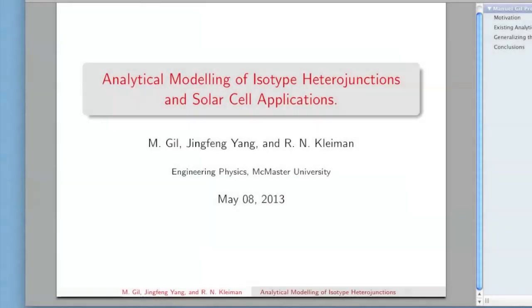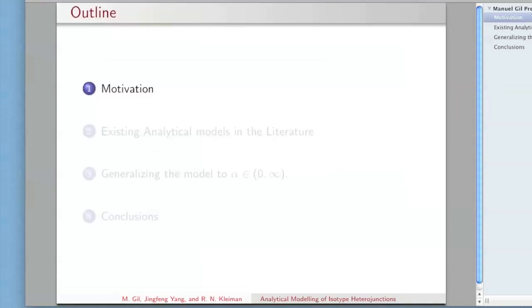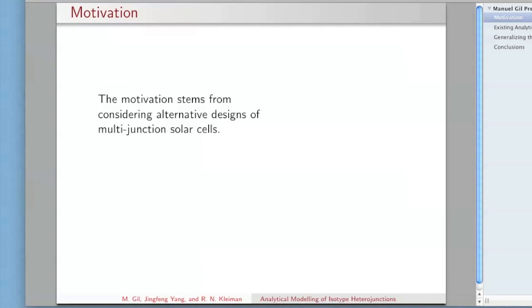This work is on the analytical modeling of isotype junctions and solar cell applications. The motivation for this comes from looking at alternative designs for multi-junction solar cells.